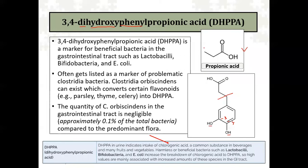This particular chemical is actually a marker for beneficial bacteria in the digestive system. It can be produced because of the presence of Lactobacillus, E. coli, Bifidobacter. There is a Clostridia bacterium whose presence can cause elevation as well. Certain things that we eat — celery, parsley, or other herbs — these flavonoids essentially get converted into DHPPA. So DHPPA, in most cases, is a reflection of the presence of these types of bacteria.